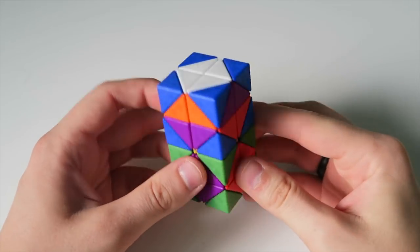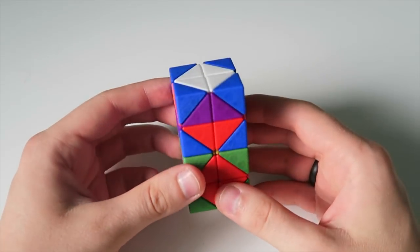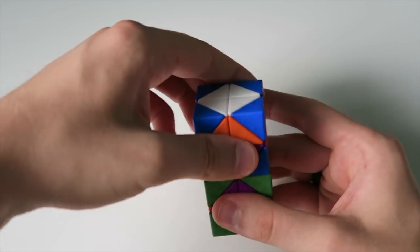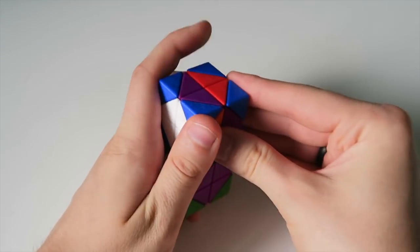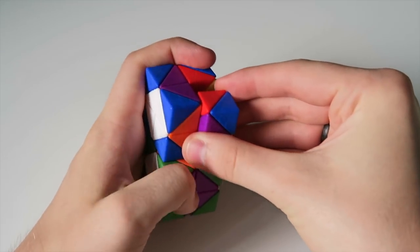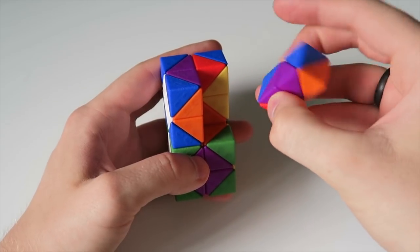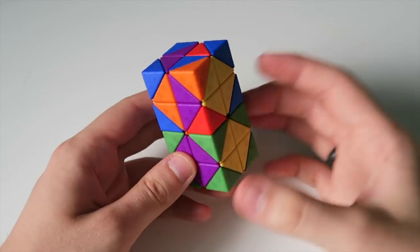So going from there this is almost exactly the same state that we had in the last video. So if we go from here I'm going to do a simple rotation like this and then I'm going to undo the pop. So I'm going to take out this piece, flip it around and put it back. So that's undone the pop.